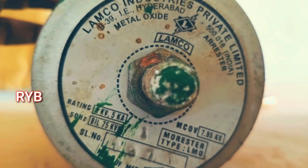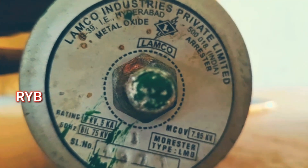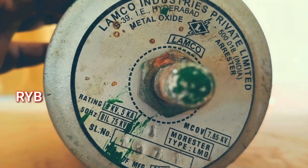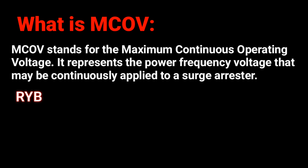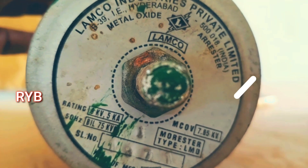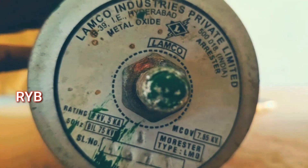Effectively, this arrestor is used for 11 kilo volts. The normal discharge current is 5 kilo amps. Maximum Continuous Operating Voltage — MOCV — is 7.65 kilo volts. MOCV stands for Maximum Continuous Operating Voltage; it represents the power frequency voltage that may be continuously applied to a surge arrestor. The MOCV selected for a given system voltage is a function of maximum line-to-line voltage as well as system grounding parameters. The MOCV on this nameplate is 7.85 kilo volts.